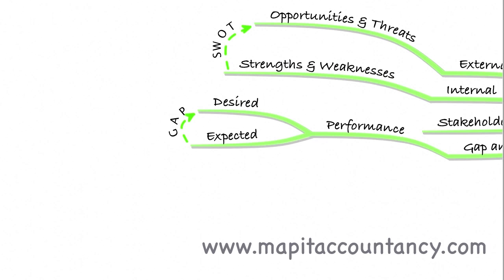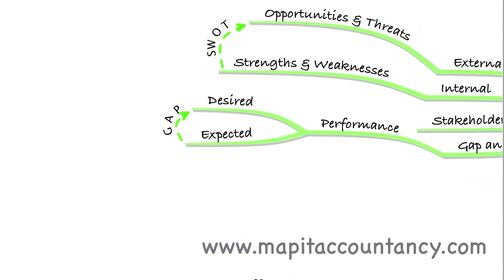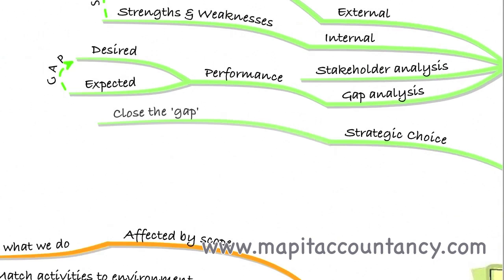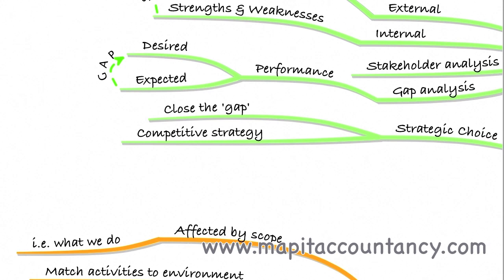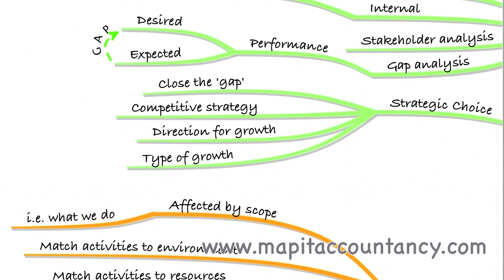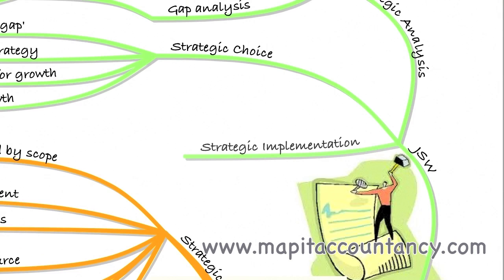Once we've undertaken a strategic analysis, we can then decide what our strategic choices are. Those strategic choices should close any gaps identified between desired and expected performance. The strategy also needs to fit with our competitive strategy, looking at competitors to ensure we can deal with them. It needs to give us a direction for growth and determine what type of growth we expect — organic growth, mergers and acquisitions — all of which we'll look at throughout this module.